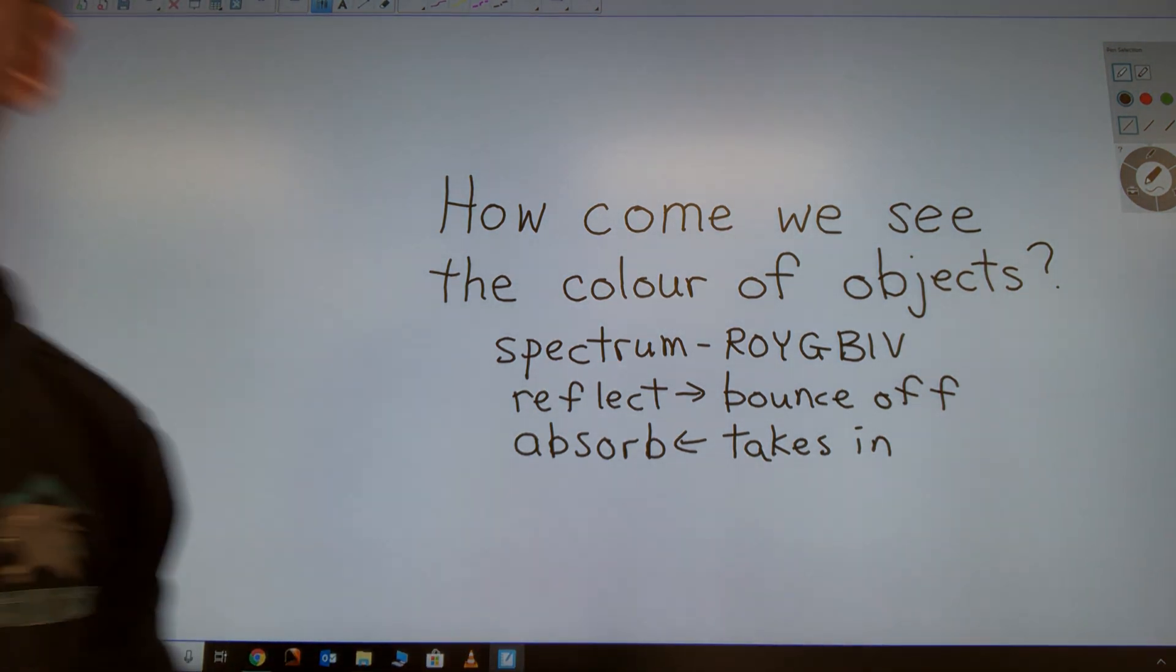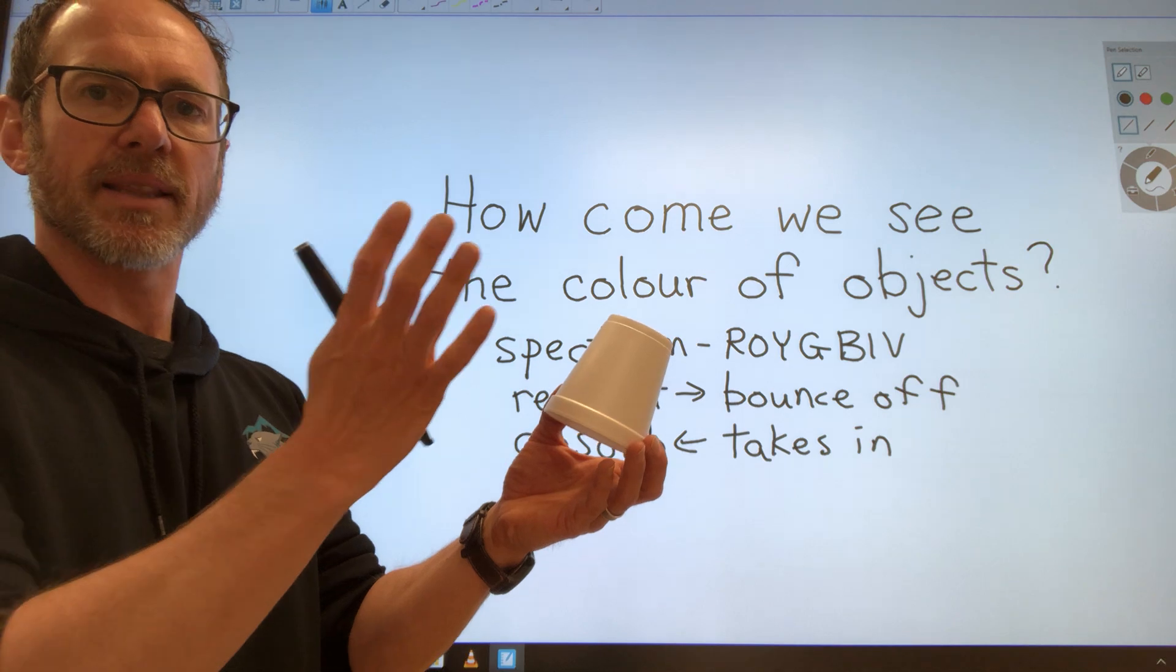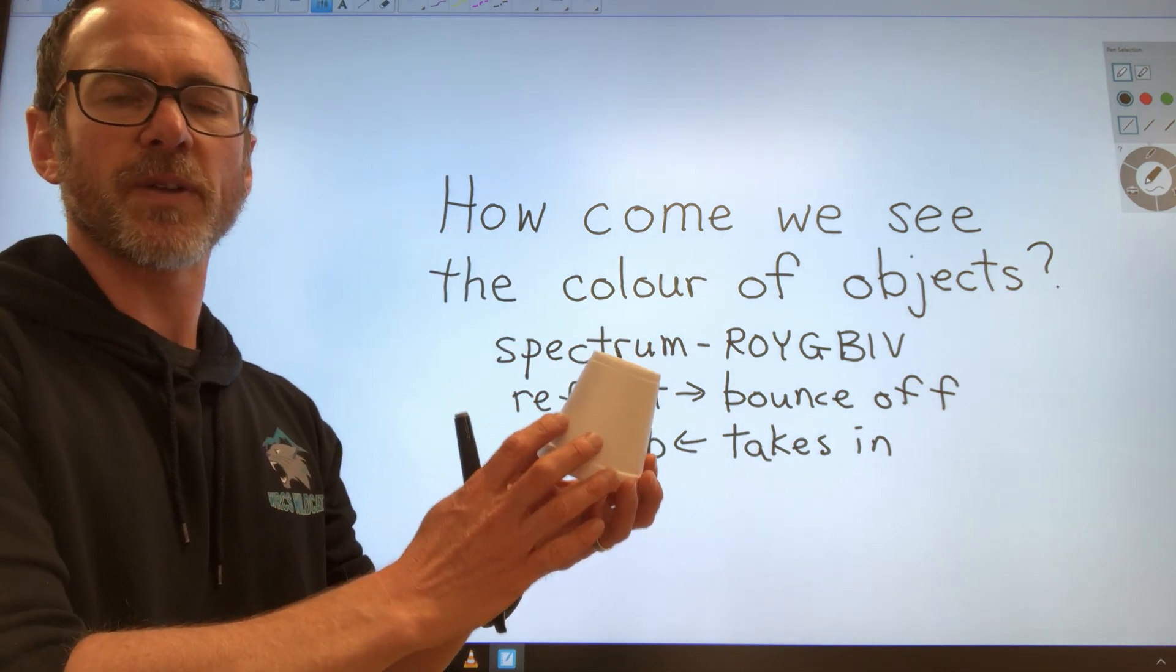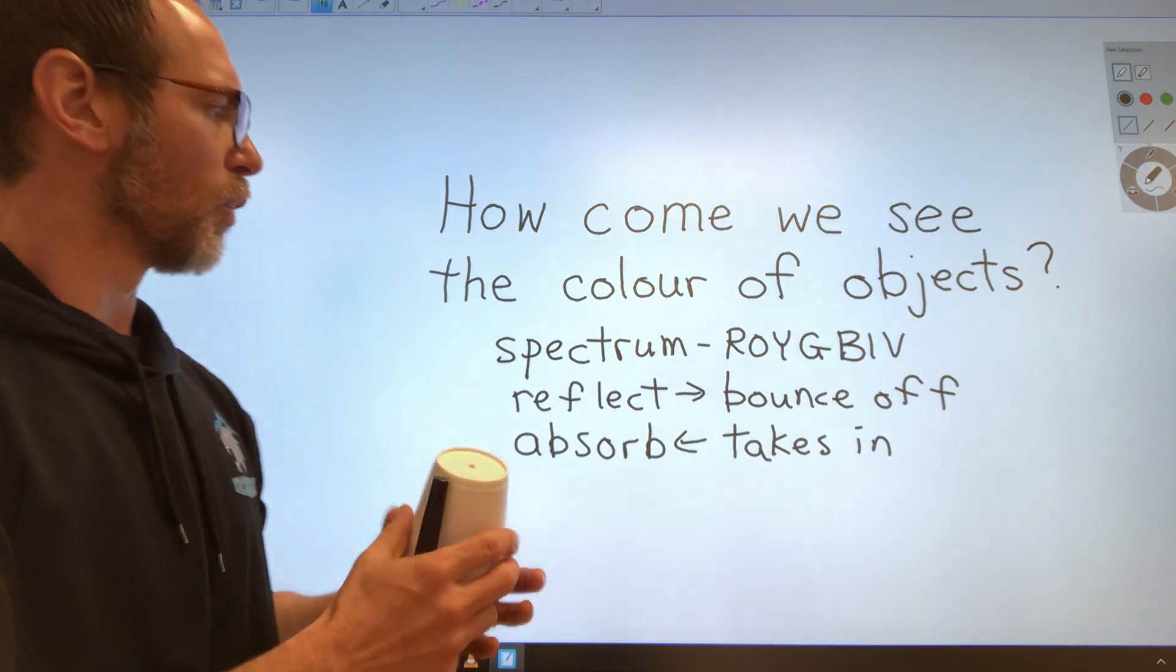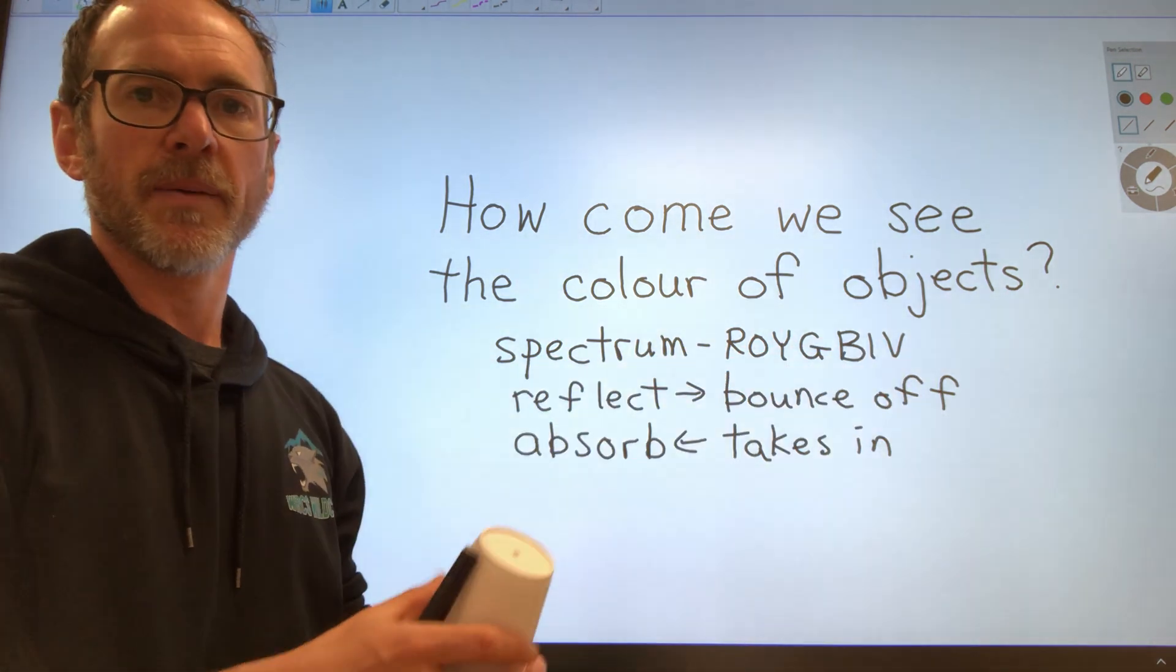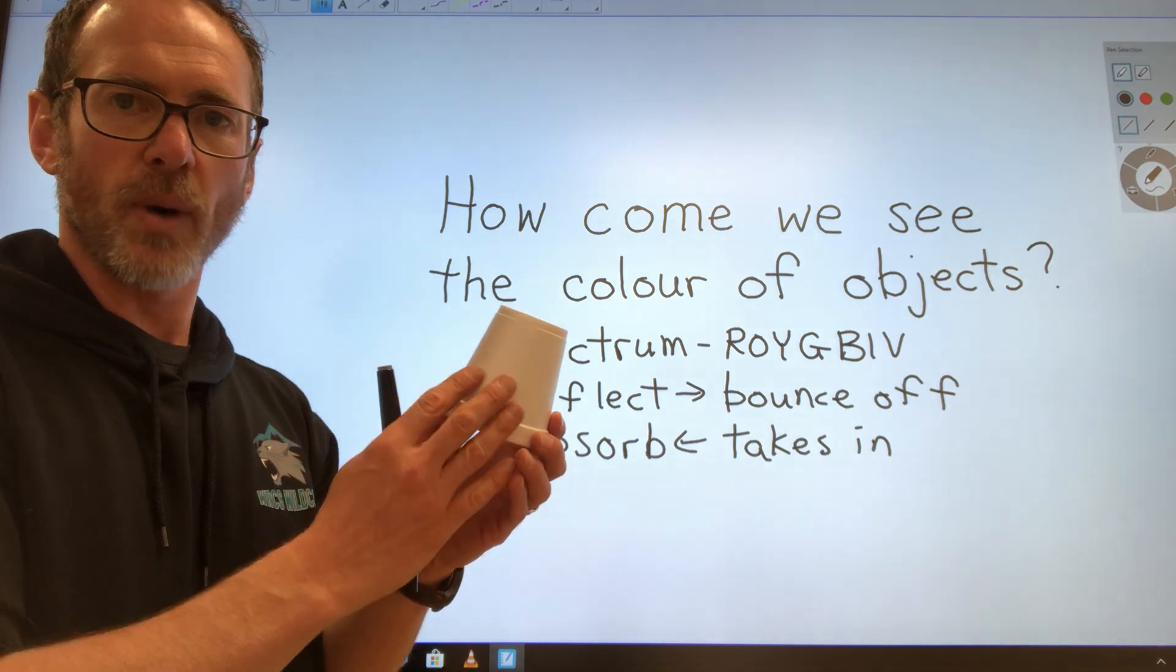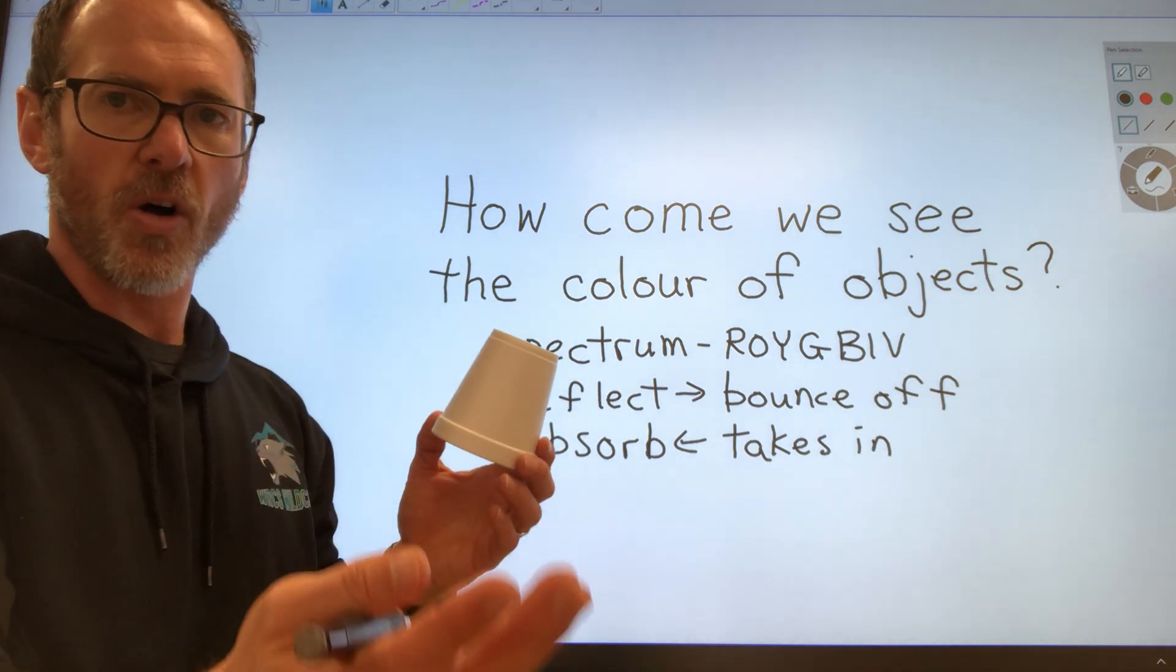If something is white, it means that the light is hitting it and reflecting all the different colors. So as we know, white light is made up of Roy G. Biv. This cup, the white light's hitting it and it's reflecting all the colors.